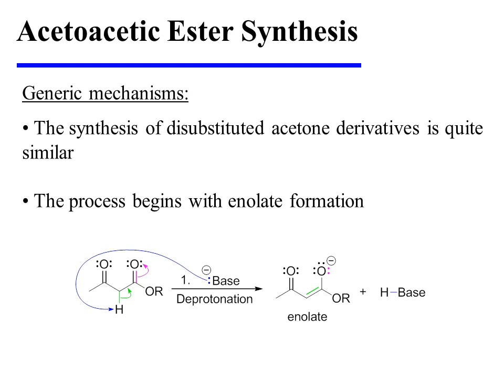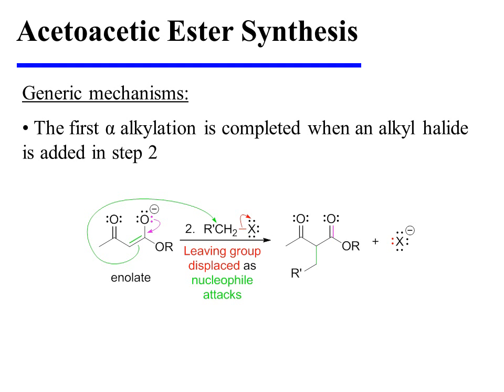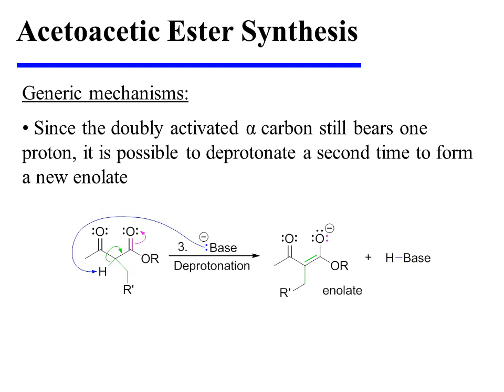The synthesis of disubstituted acetone derivatives is quite similar, and also begins with enolate formation. The first alpha-alkylation is completed when an alkyl halide is added in step 2 of the reaction. Since the doubly activated alpha-carbon still bears one proton, it is possible to deprotonate a second time in order to form a new enolate.